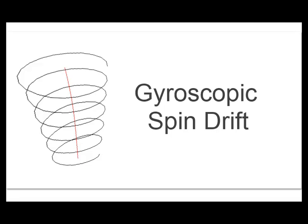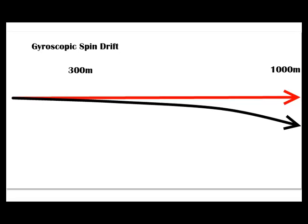Gyroscopic spin drift. Bullets fired from right twist barrels drift to the right by something like 10 inches at 1,000 yards. The more stable the bullet, the less drift. Twice the time of flight is about 4 times the spin drift, so it isn't a big deal for deer hunting up to 300 yards.